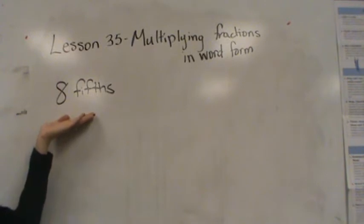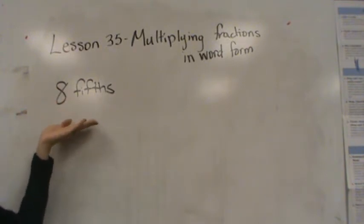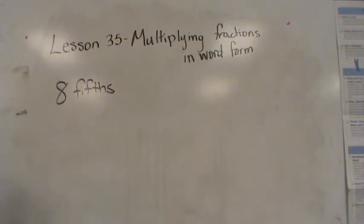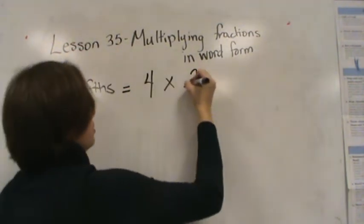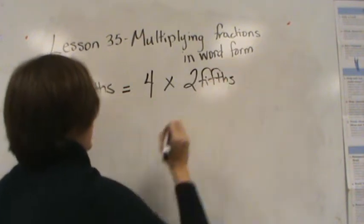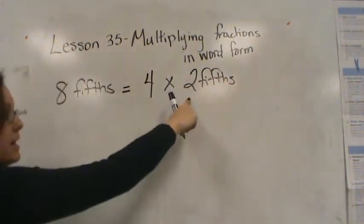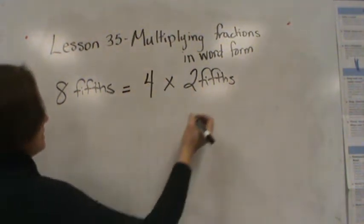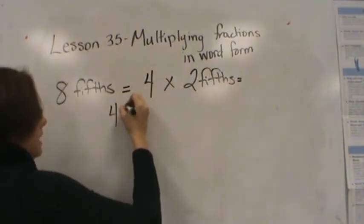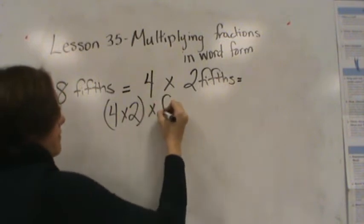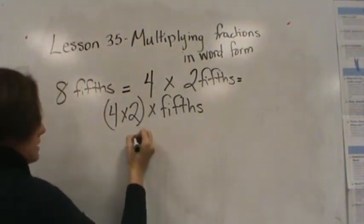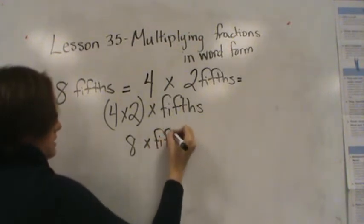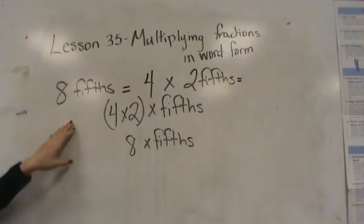I have 8 fifths. Now, 8 fifths is really an answer — it is the product. So we're going to create a multiplication problem, and 8 fifths is going to be the answer. So 8 fifths is the same as saying 4 times 2 fifths, because 4 times 2 is 8, and I would get 8 fifths. That is the same as saying 4 times 2 times fifths, and I know that 4 times 2 is 8 times fifths. So those are all ways that we can represent 8 fifths.